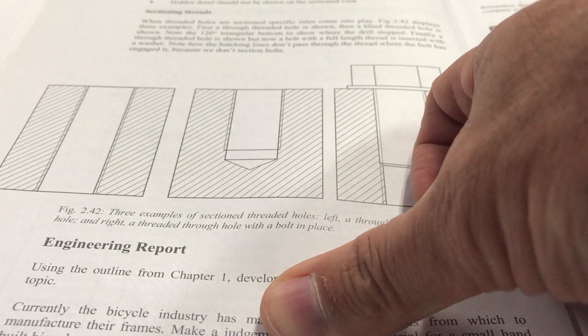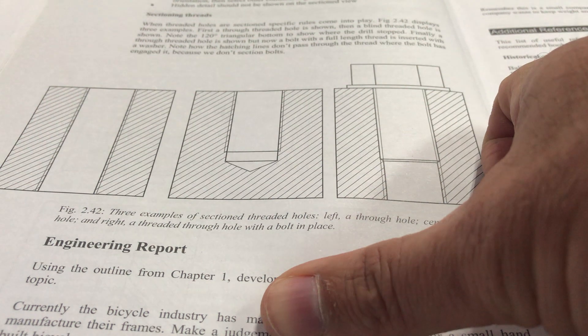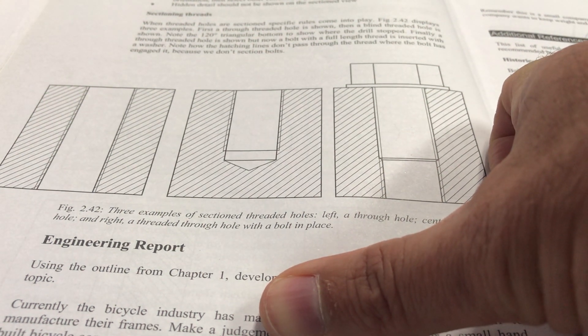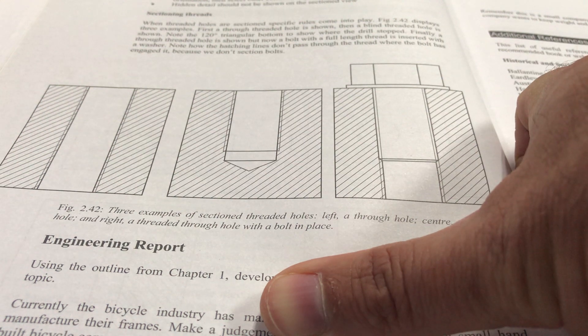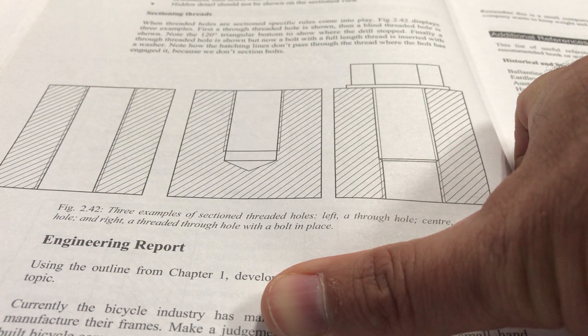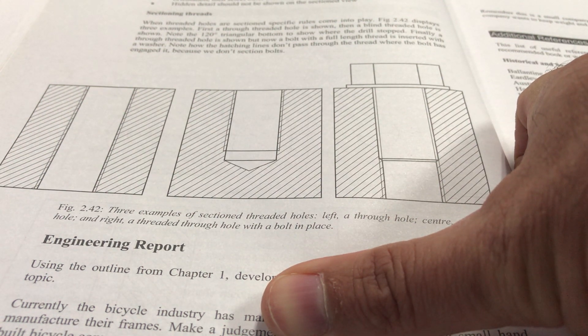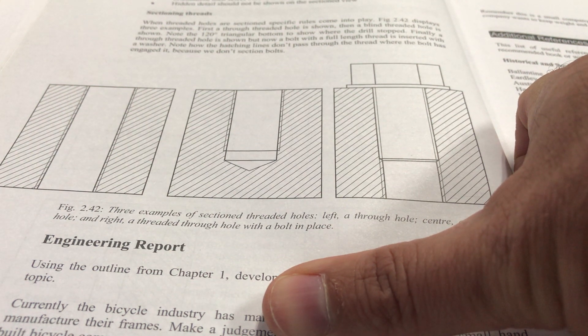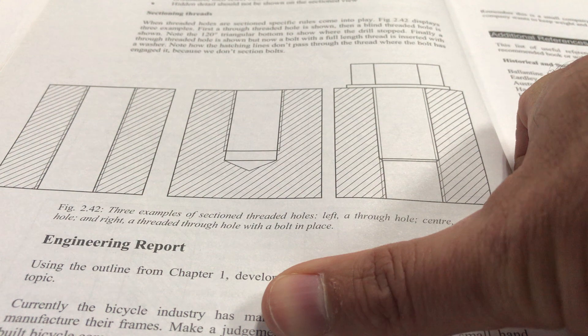Now in the next picture we have a hole that's blind. So a threaded hole which is blind. So three examples, sectioned thread hole, a through hole and a blind hole.